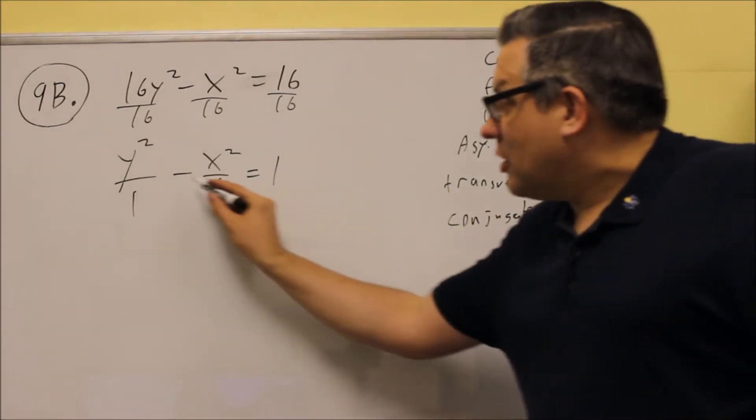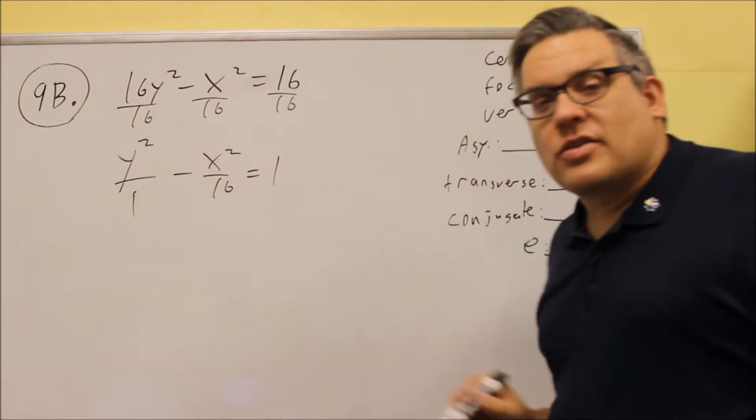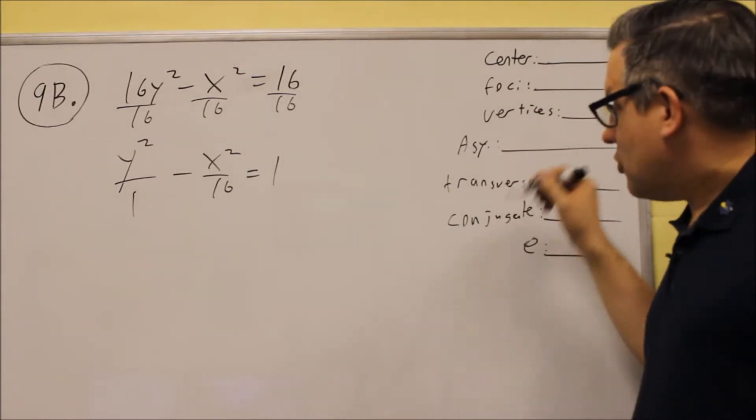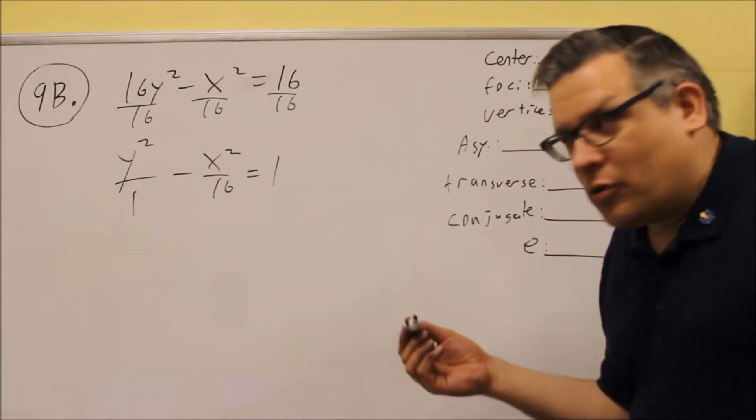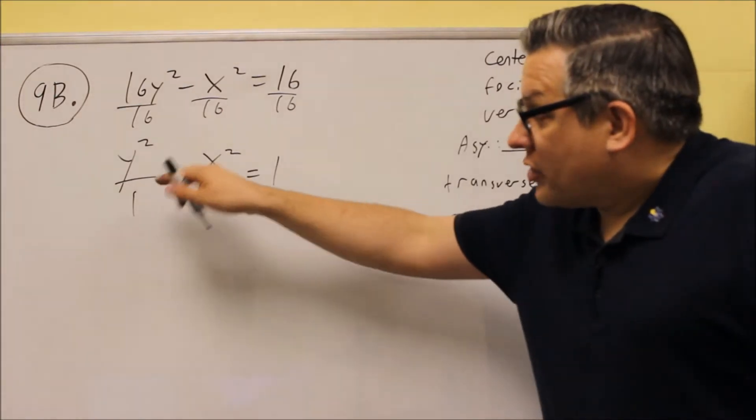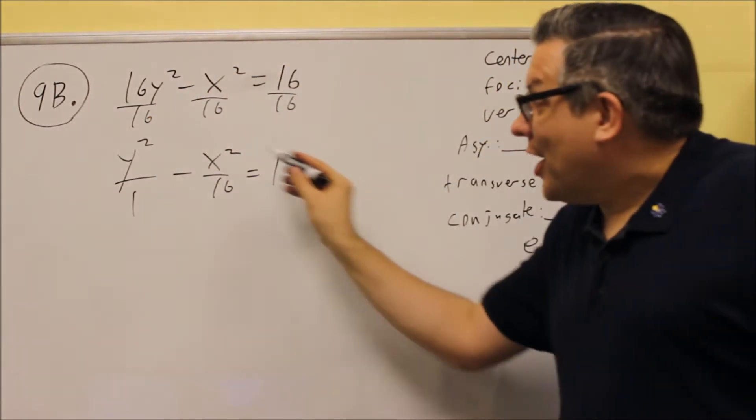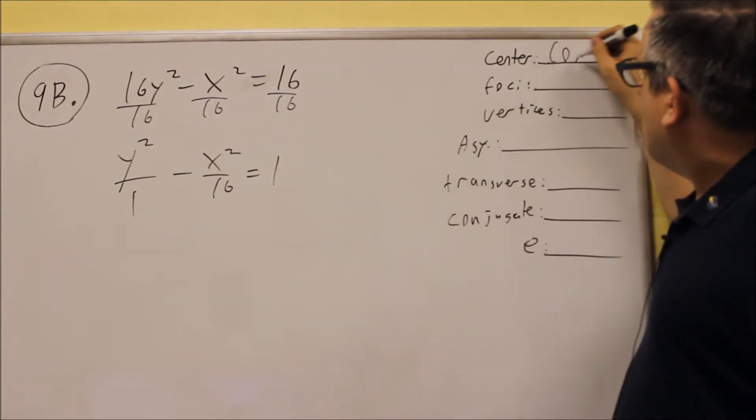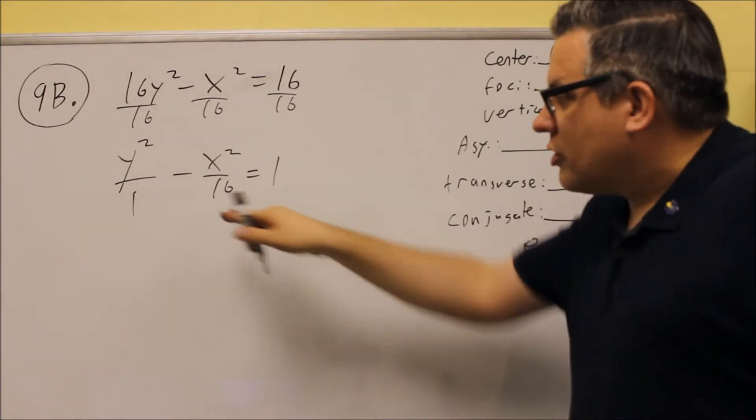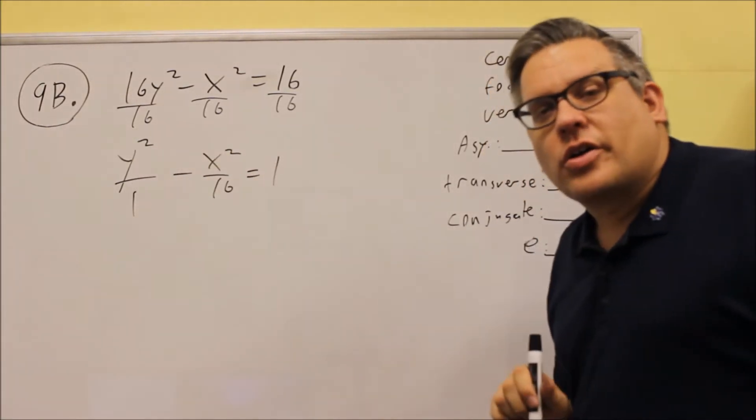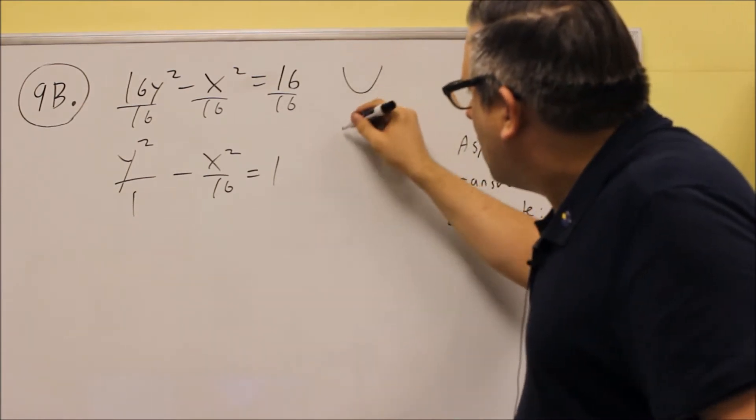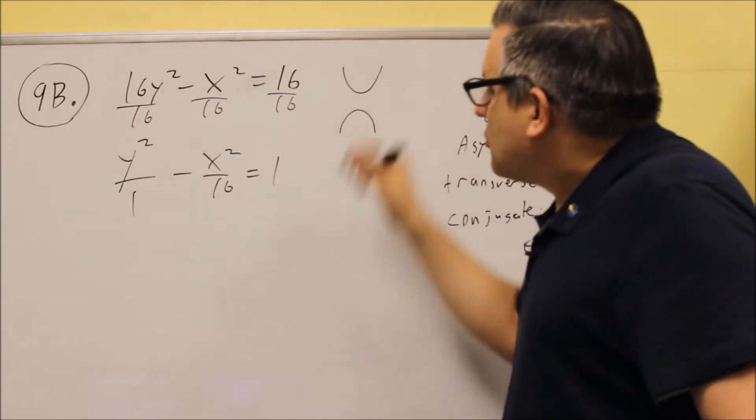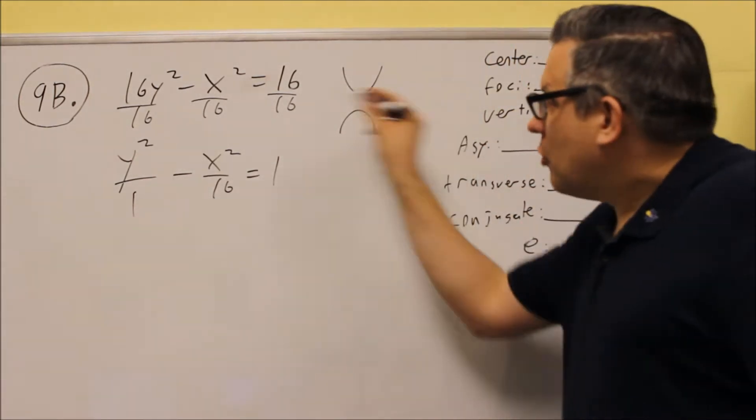What we can tell about this is it's going to be a hyperbola because you've got the minus sign there, and you can also tell by what the question is asking. If it's asking you for asymptotes and transverse conjugate, that tells you you're looking at a hyperbola. What we tell about this hyperbola is since there's no parentheses around any of those, we know that the center is going to be 0, 0. What we also know about this hyperbola is since the y squared comes first, this is a hyperbola that opens up and down. If y squared comes first, it opens up and down. If x squared comes first, it opens sideways.